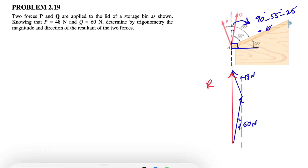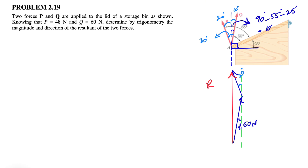Now we can find another angle here. To find this angle, it will be 85 minus 55, which is 30 degrees. We know the angle from the previous step was 10 degrees. So here we have 30 minus 10, which is 20 degrees. That angle in here is also 20 degrees.